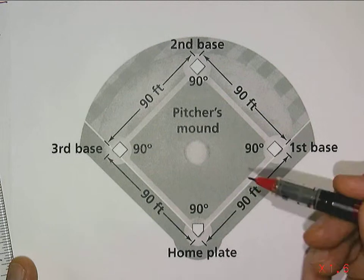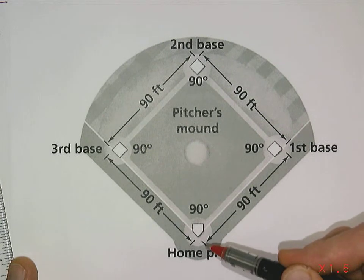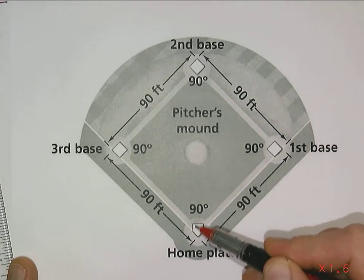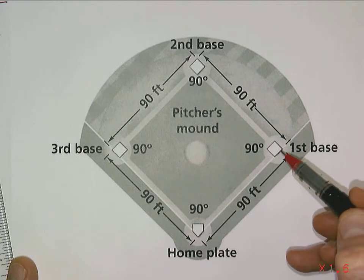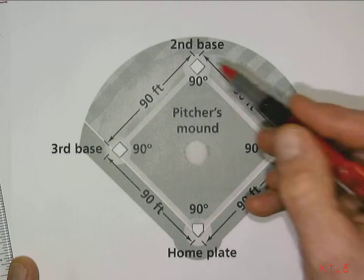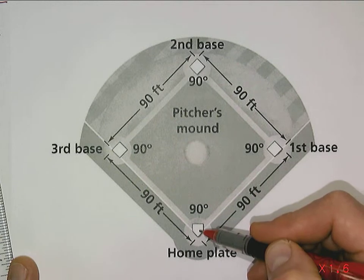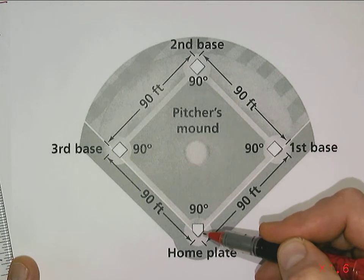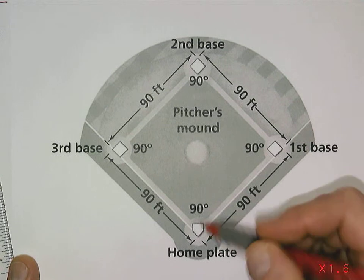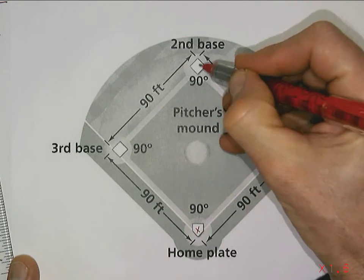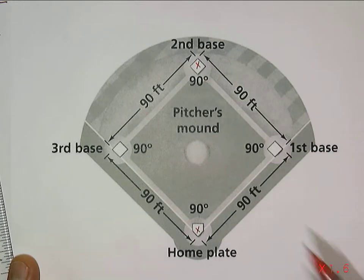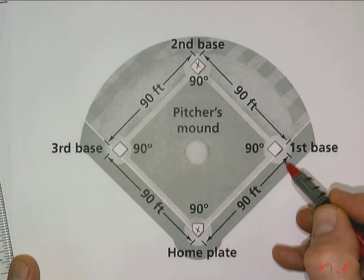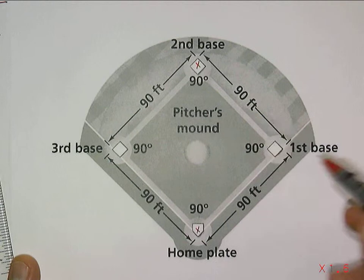The idea in this problem is we have this scenario: Horace Hansen is the catcher at home plate, and there's a person on first base who's going to steal second base. So the catcher has to throw the ball from home plate down to second base. We know on a baseball diamond it's 90 feet to each base, so 90 feet and 90 feet.